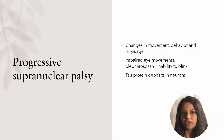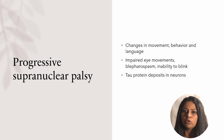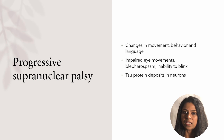In progressive supranuclear palsy, there is dementia along with difficulties with balance, which may cause frequent falls, and movement disorders of the eye — such as blepharospasm, inability to open the eye, or problems with blinking — which may make the eye dry and red.